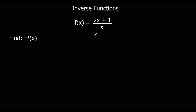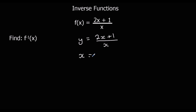Here's a harder one. The principle is the same — we'll write it as y equals first. This is harder because changing the subject of the formula is harder. Then I'm going to switch the x's and y's around, but you'll see this time I've got two y's. So it's harder to make y the subject. We're going to multiply by y, so xy equals 2y plus 1.